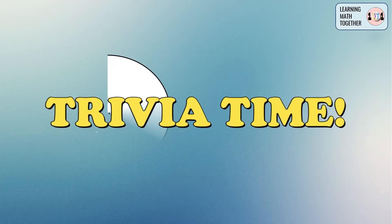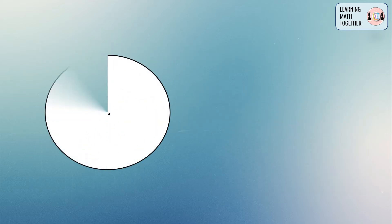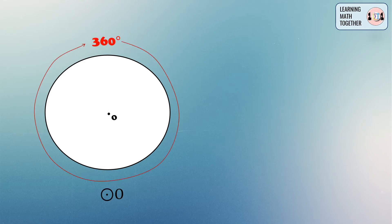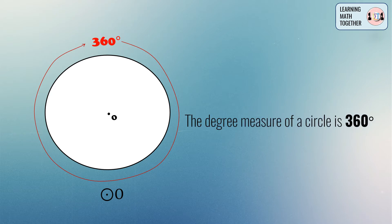Just a short trivia before we proceed in determining the measurements of the central angles: the degree measure of a circle is equal to 360 degrees. You have to bear that in mind because we will be using this idea to solve for the measurements of our arcs and central angles.